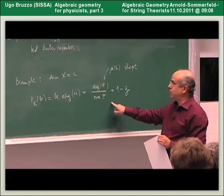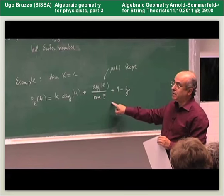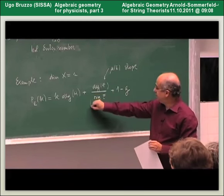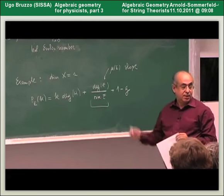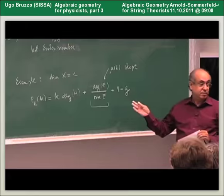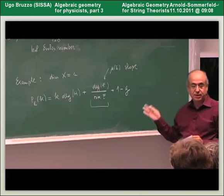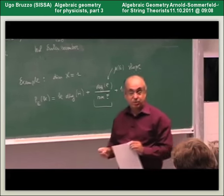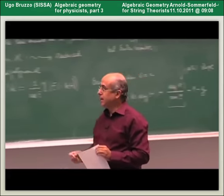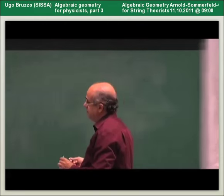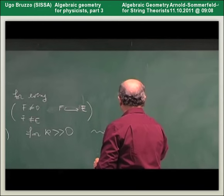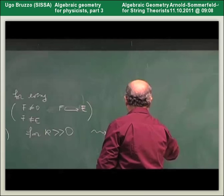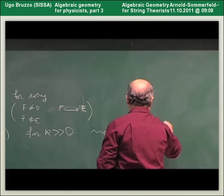This may look unnecessarily complicated, but if we look at the form of the Hilbert polynomial on a curve, when we compare the two polynomials, only the middle term matters because the other two don't depend on the bundles. Therefore on a curve this reduces to a much easier condition: the relation between the slopes.